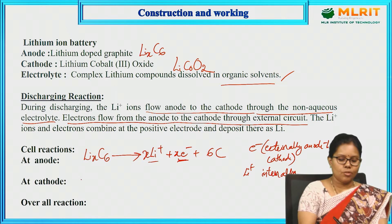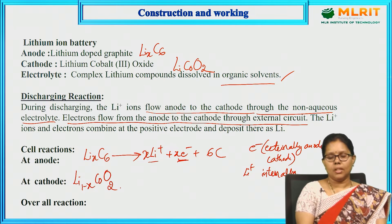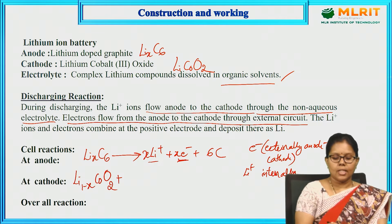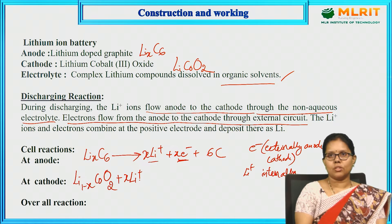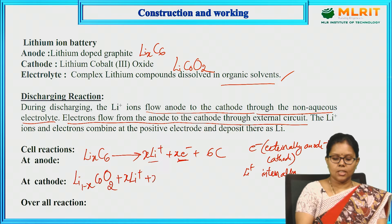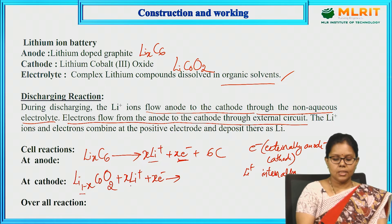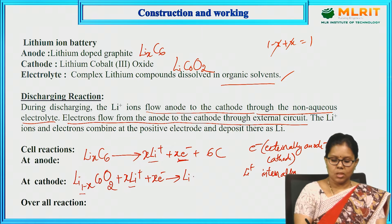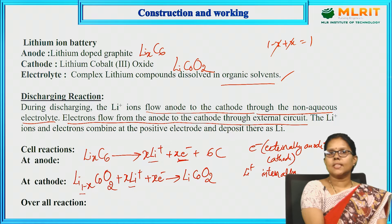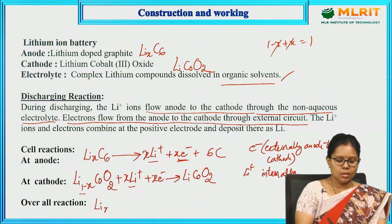At the cathode we have lithium cobalt oxide Li(1-x)CoO2. The x lithium ions coming from the anode through the electrolyte and the x electrons arriving via the external circuit combine at the cathode. Since (1-x) + x = 1, the cathode reaction produces LiCoO2. The overall reaction is: LixC6 + Li(1-x)CoO2 → 6C + LiCoO2, generating electricity. Oxidation occurs at the anode and reduction at the cathode.